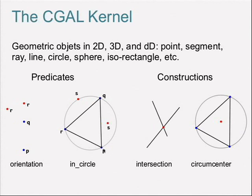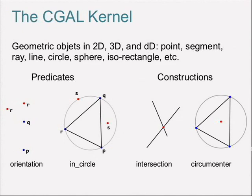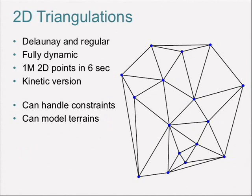These predicates and constructions are a little tricky to deal with in floating-point arithmetic — Sylvain will speak about that later. Now let's start the guided tour. One big chapter is triangulations. Given input points in the plane, you connect them with triangles covering the whole set. One particularly interesting triangulation is the Delaunay triangulation, which has the property that for every triangle, no other input point lies inside its circumcircle. This makes the triangles nicely shaped and not elongated. Our data structures are fully dynamic, so you can insert and remove vertices and the data structure updates on the fly.